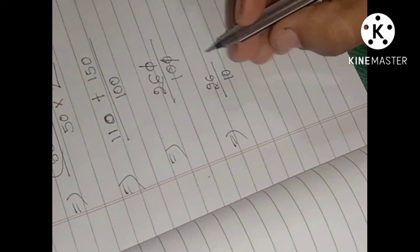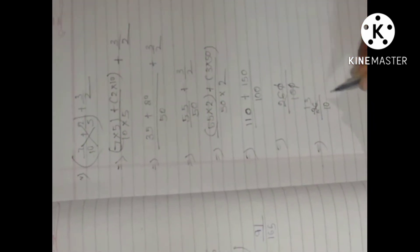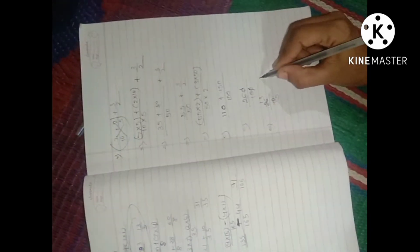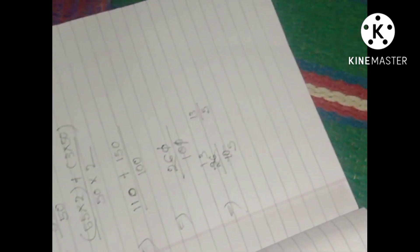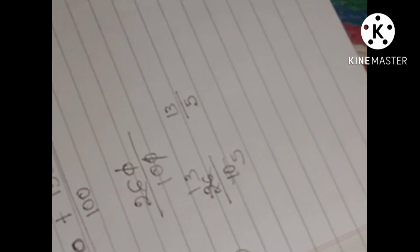So this is how we cut 2 tables. 2 times 1 is 2, 2 times 3 is 6, 2 times 5 is 10. So this answer is 13 by 5. Thank you.